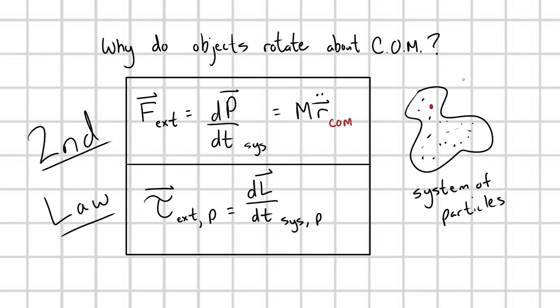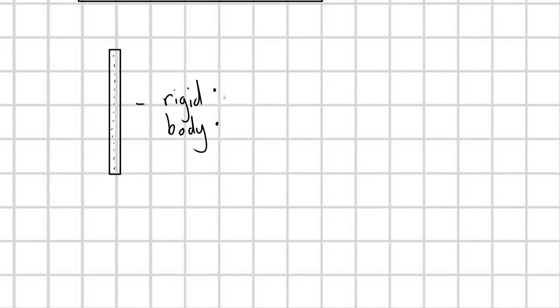All right, so now that we have our toolbox of ideas, let's draw a stick. This stick is made up of a bunch of particles, and this stick is an example of a rigid body.